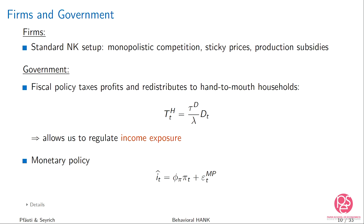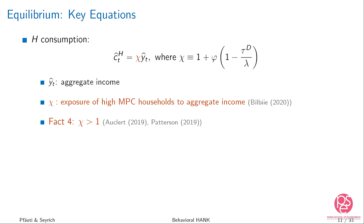Two key equations come out of the model. First, in the linearized model, the consumption of hand-to-mouth households is a linear function of total output. The chi parameter captures the income or consumption sensitivity of hand-to-mouth households to aggregate income fluctuations, and depends on the redistribution and dividend tax tau_D. Going to the data — as in Auclert or Christina Patterson — households with high MPCs have income more sensitive to aggregate income fluctuations, so chi is larger than one. This is fact four.